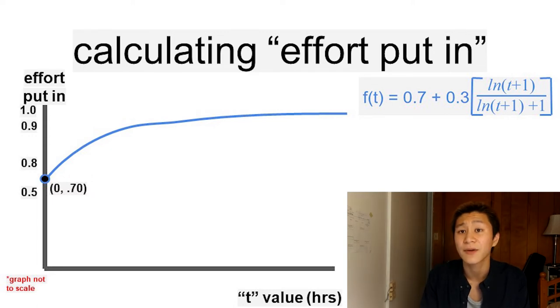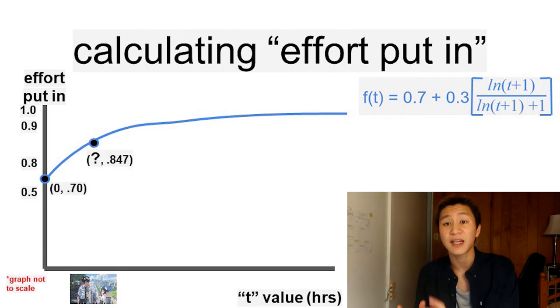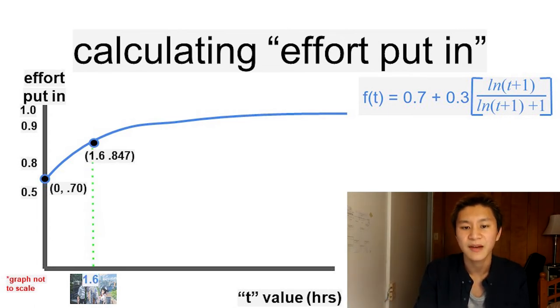Let's look at our examples again for a clearer picture. Our three-hour date with an a value of 180 had an expected effort of 84.7%. When we plug that into this f of t function, we find that one should spend about 1.6 hours preparing for a three-hour date.